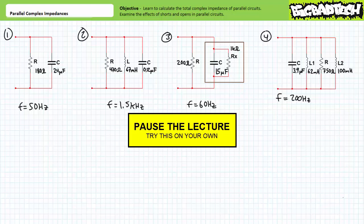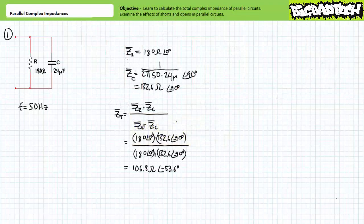If you're tracking, you should have obtained the following results. For our first example problem, we're given a parallel relationship of a 180 ohm resistor and a 24 microfarad capacitor at a frequency of 50 hertz. The resistor is an impedance of 180 ohms at an angle of zero degrees. The capacitor is an impedance of 132.6 ohms at an angle of negative 90 degrees. Calculating the total impedance using the quick and dirty method for two impedances in parallel, we arrive at 106.8 ohms at an angle of negative 53.6 degrees.